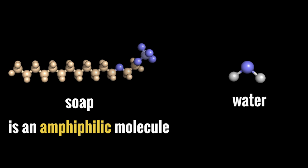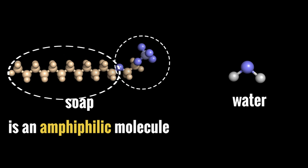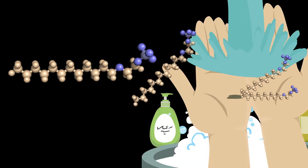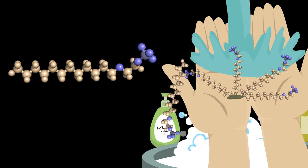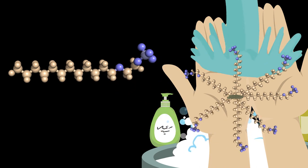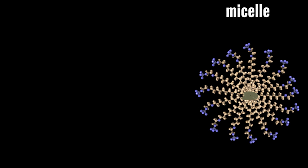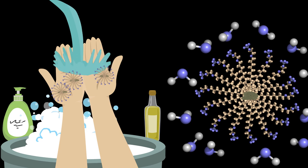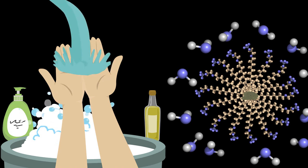Amphiphilic is a big word that means half of soap will mix with water and half won't. The half of the soap molecule that doesn't mix with water will surround the dirt that also doesn't mix with water. They'll stick together because they are similar. Now the dirt is surrounded by soap in a little sphere called a micelle. And what's pointed outward? The parts of the soap that do mix with water. Now the whole thing can dissolve in water and be washed away.